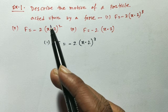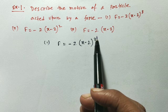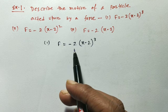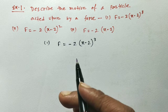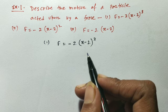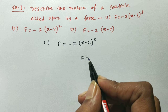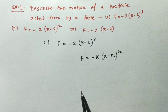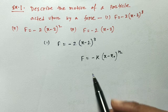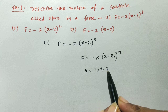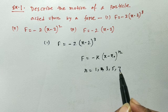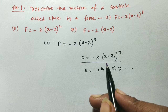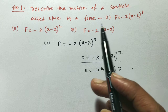Let me solve this example. Three forces are given and I have to describe the motion of the particle. The first one is F equals minus 2 into (x minus 2) whole cube. We know the general force equation for the motion of a particle is F equals minus k into (x minus x naught) to the power n. When n is odd, that is n equals 1, 3, 5, 7, etc., then the motion is harmonic motion, and especially when n equals 1, the motion is simple harmonic.